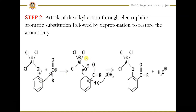In the next step, a hydrogen is removed to regain aromaticity and restore the aromatic system. Since the pi bond has formed a new sigma bond, aromaticity is lost. To restore aromaticity, elimination of hydrogen takes place — the bonded electrons shift to form a pi bond, and this pi bond breaks to form a negative charge on the oxygen.